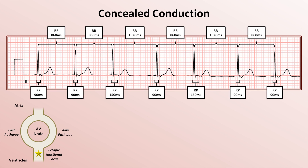With each wave of depolarization that originates from the junctional focus, it travels quickly up the fast pathway and slowly up the slow pathway, such that the atrial side of the slow pathway has already been depolarized and is now refractory before the impulse traveling through the slow pathway reaches the atria. At the same time, the depolarization wavefront moves distally from the junctional focus to depolarize the ventricles. This gives us a narrow QRS complex, followed immediately by a retrograde P from the retrograde wavefront traveling up the fast pathway. If this were all that was going on, this would look indistinguishable on EKG from a patient with the same junctional rhythm but without dual AV nodal pathways.